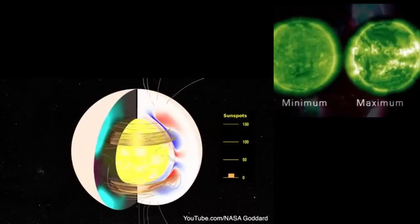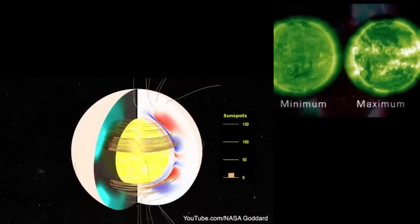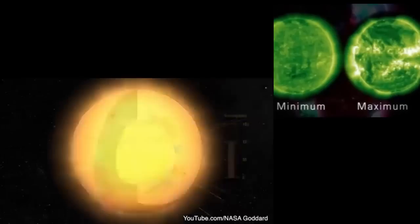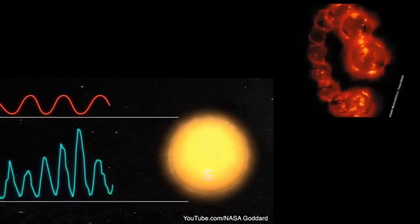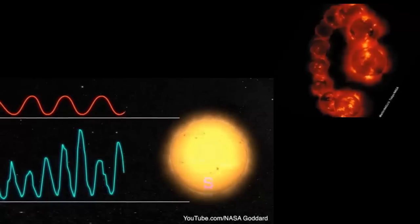Because the sunspot cycle follows a similar pattern regardless of the orientation of the poles, it only takes half as long as the solar cycle. The two cycles are different, but the 11-year sunspot cycle is often referred to as the solar cycle, which can be a little confusing.